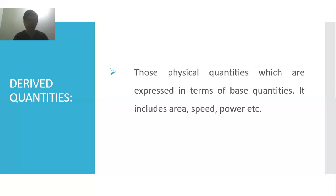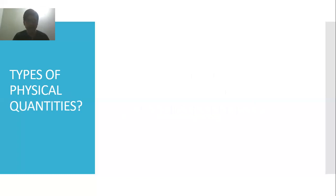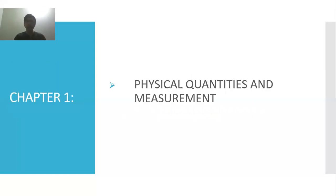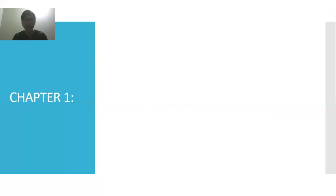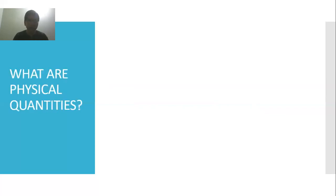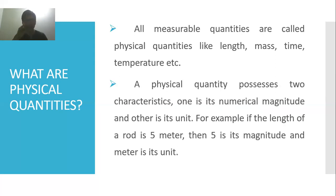That's it for this lecture video. Let's have a quick review of what we covered in this first lecture of class 9 physics. We started with chapter one. Before that, I told you we have a total of nine chapters. Then we started chapter one, whose name is Physical Quantities and Measurement. We learned that measurable quantities are called physical quantities — like length, mass, time, etc.